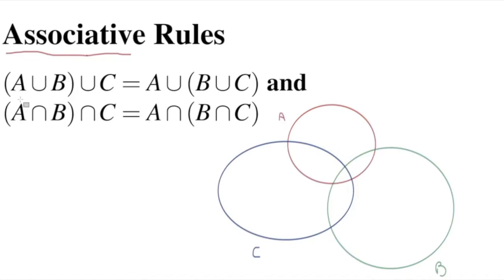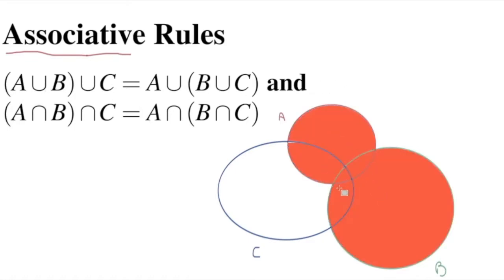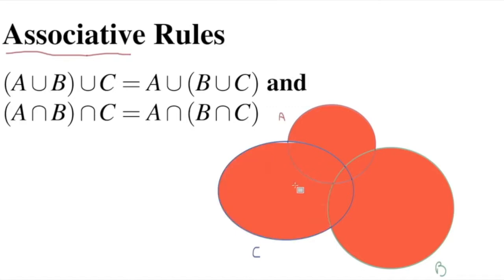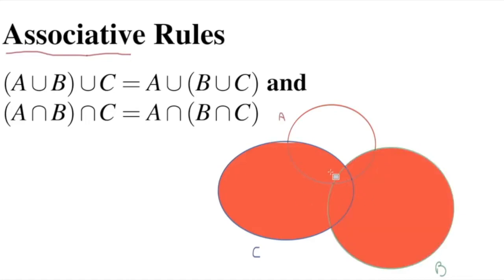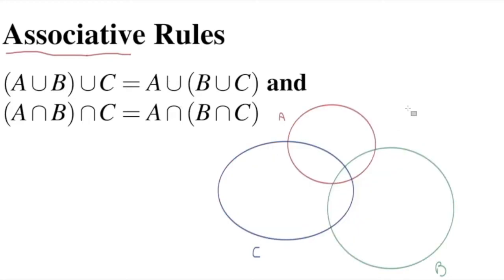Let's look at why this is so using a Venn diagram with three sets A, B, and C. First we get the union of A and B - the total area of A and B - and then we take the union of that with C, ending up with the total area of A, B, and C. If we do it the other way - B union C first, then union with A - we also end up with the total area of A, B, and C. So the order of operations doesn't matter with the union operator.